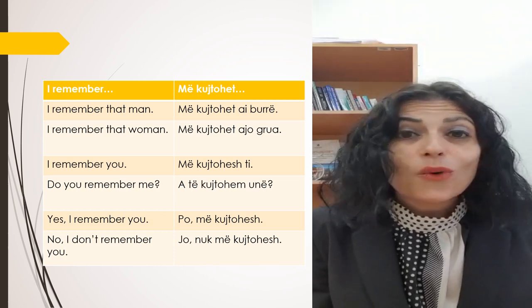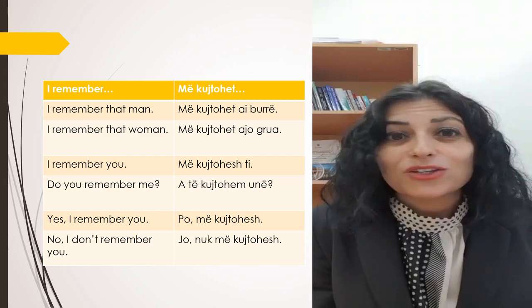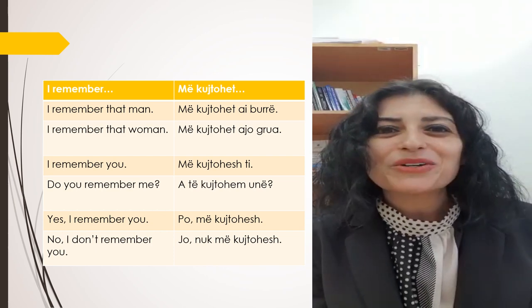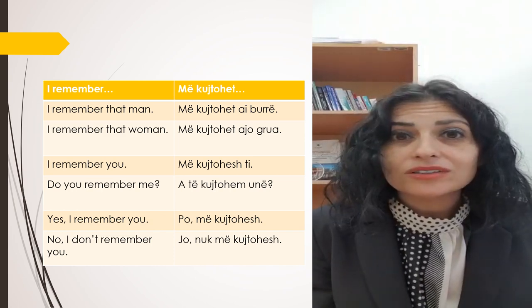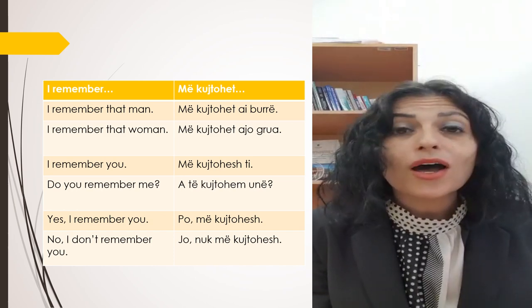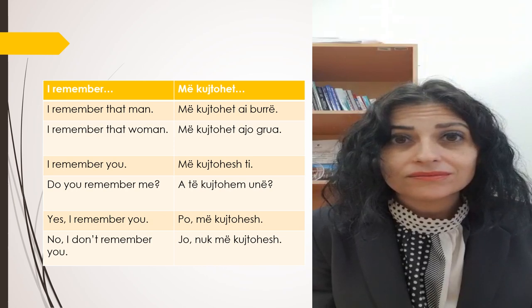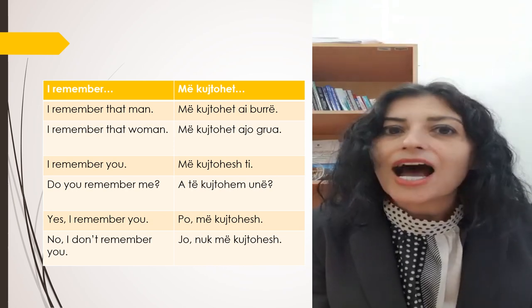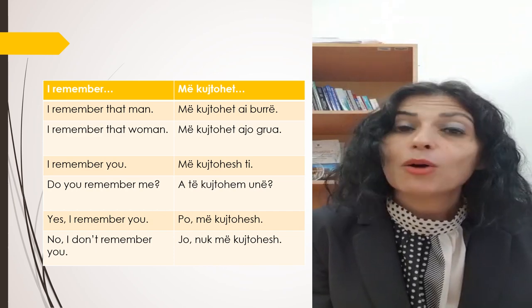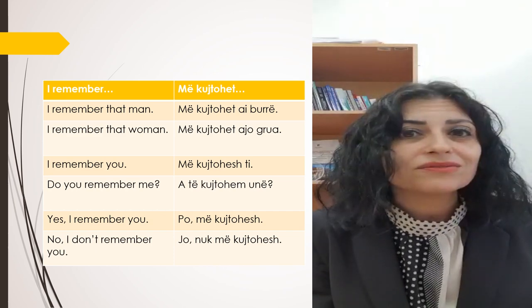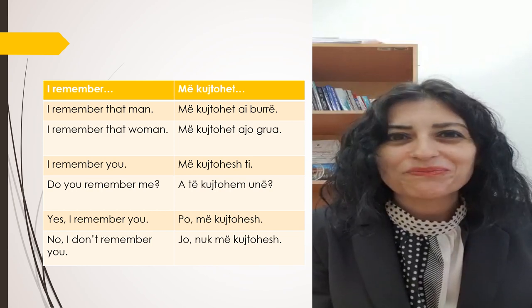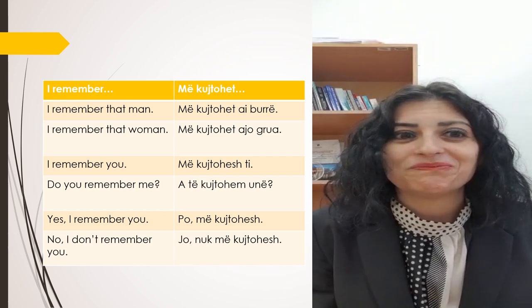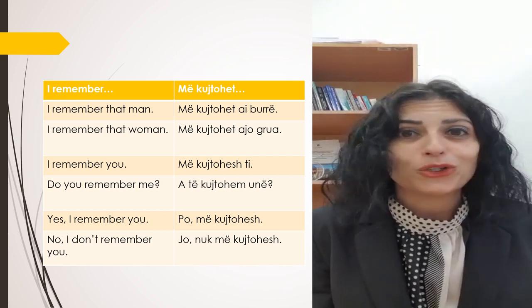Or, if you want to ask a question to someone you are meeting — 'do you remember me?' — in Albanian language you will say: 'a të kujtohem unë?' And then the answer will be: yes, I remember you — 'po, më kujtohesh' or 'po, më kujtohesh ti'. Or: no, I don't remember you — 'jo, nuk më kujtohesh'.